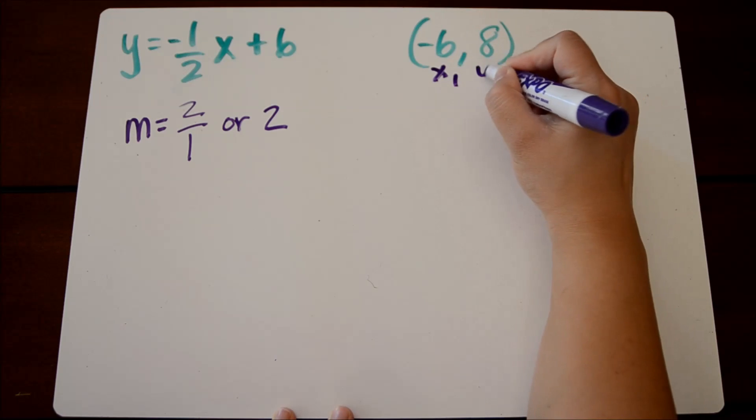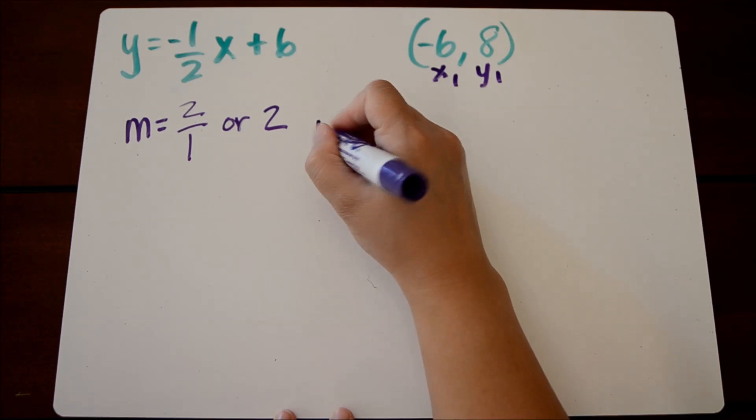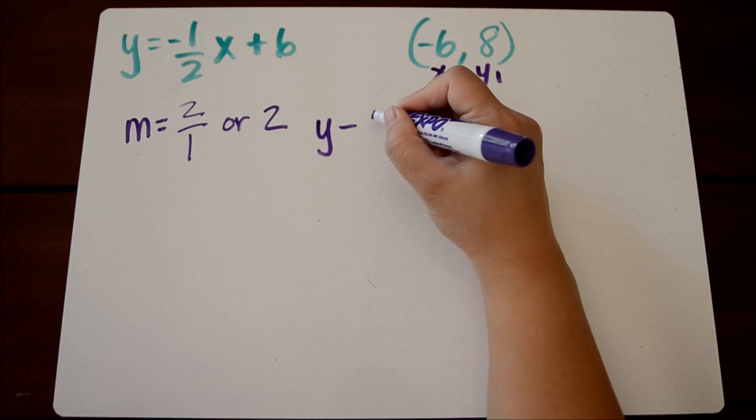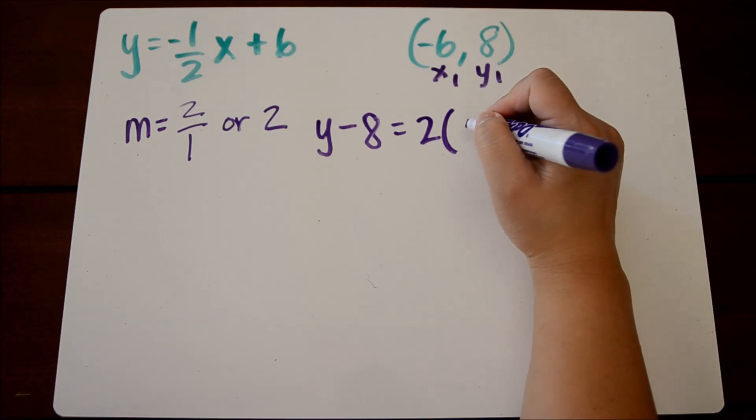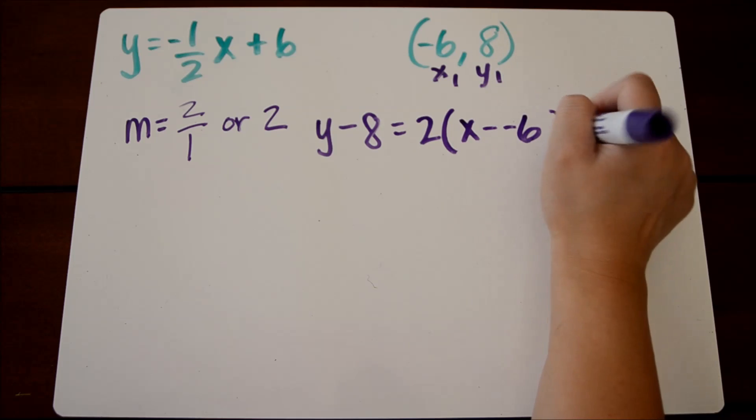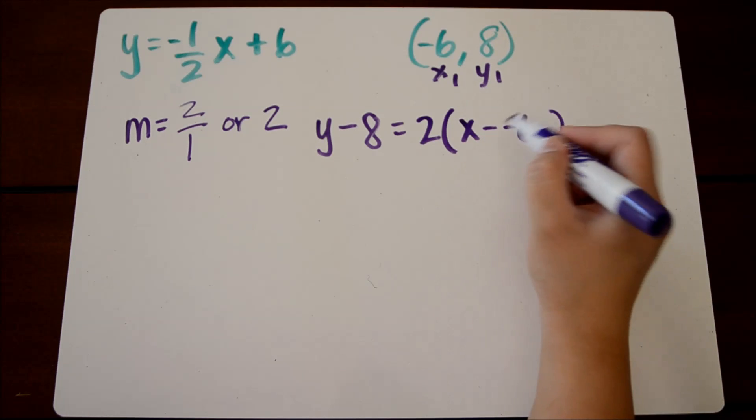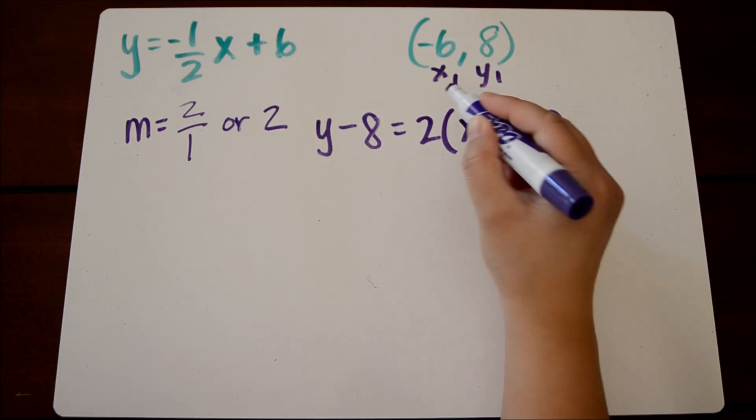Again, starting with point-slope form, we get y minus eight equals two times x minus a negative six. If you need to review that, we do have some tutorials on point-slope form.